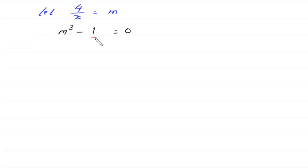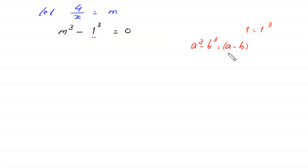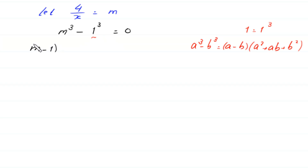Now, because 1 is equal to 1 cubed, we can write this 1 as 1 cubed. According to the algebraic identity a cubed minus b cubed equals a minus b times a squared plus ab plus b squared, m cubed minus 1 cubed can be factorized as m minus 1 times m squared plus m plus 1, equal to 0.